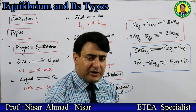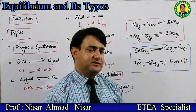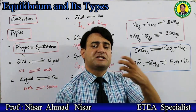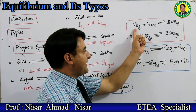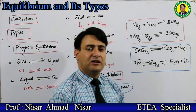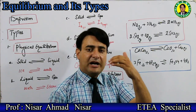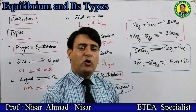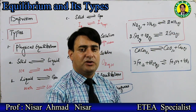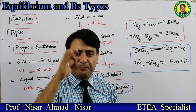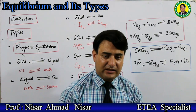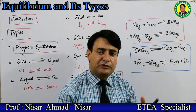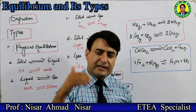In homogeneous equilibrium, all reactants and products are in the same physical state. For example, nitrogen and hydrogen reacting to form ammonia is a homogeneous equilibrium - nitrogen, hydrogen, and ammonia are all gases. Similarly, sulfur dioxide reacting with oxygen to form sulfur trioxide is also a homogeneous equilibrium, because all reactants and products are in the same physical state.